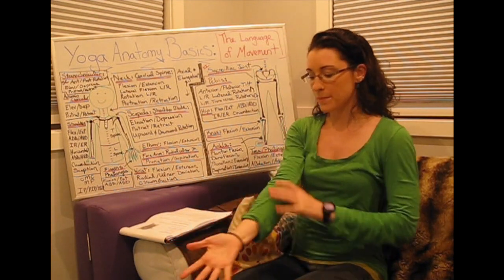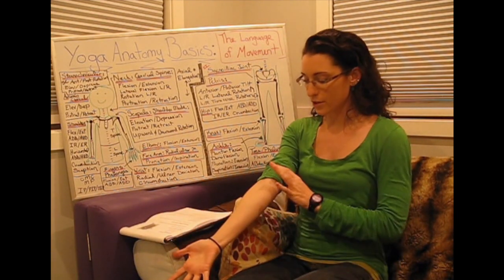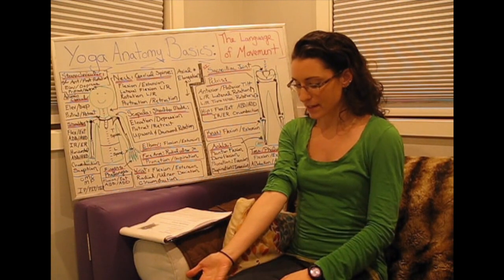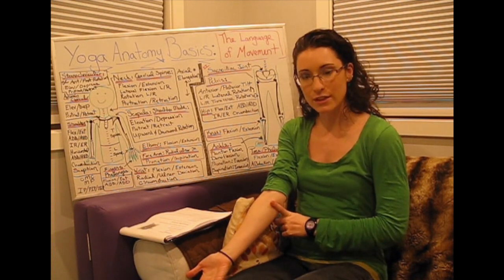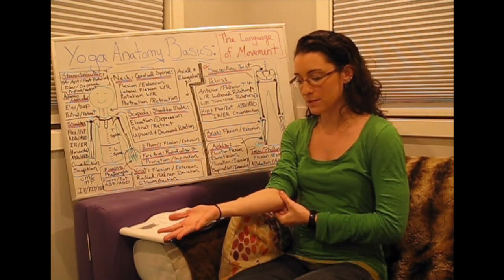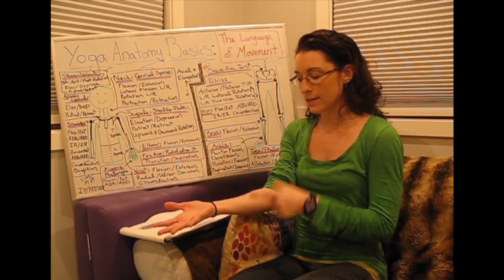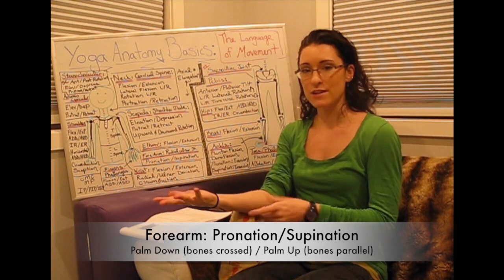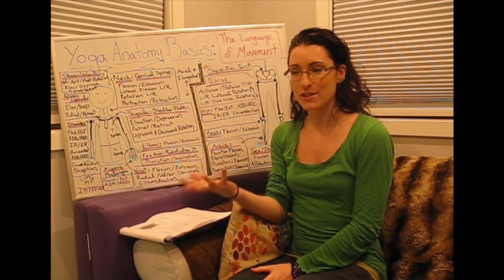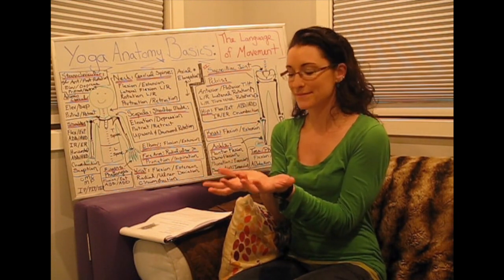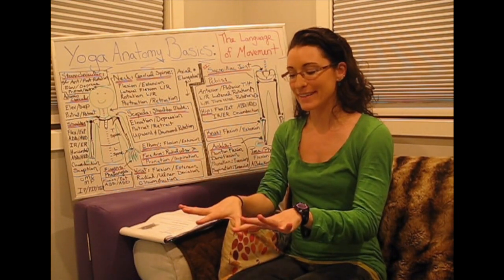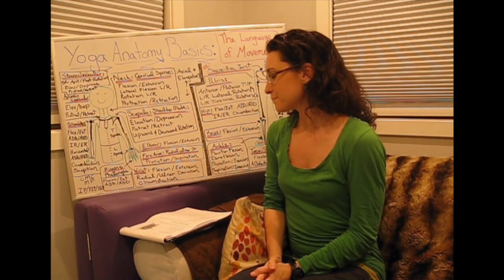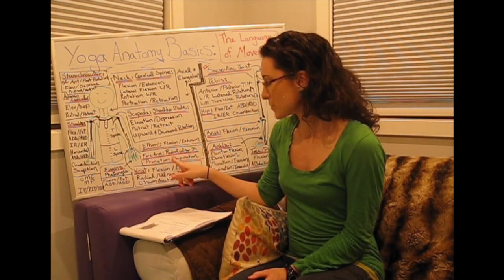Then we go down to the forearm. In anatomical position, the palmar surface faces forward, creating evenness between the radius and the ulna. There's a movement that happens between the two forearm bones at the radioulnar joint: pronation — turning your palm down — and supination — turning your palm up. I like to remember supination as carrying a bowl of soup. That's the only movement that really happens at the forearm.